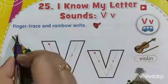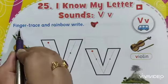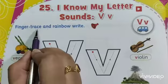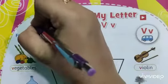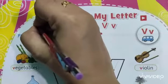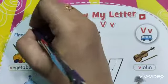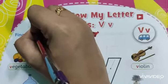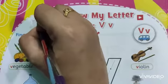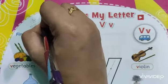First of all, you see the heading: Finger, Trees and Rainbow. So this is your another classwork. You can write here CW, and today's date: 08/10/2021.